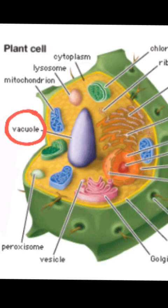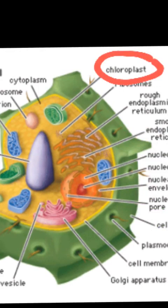Vacuole maintains acidity, pressure regulating, transporting, and responding. Chloroplast converts light energy into chemical energy, photosynthesis involving.